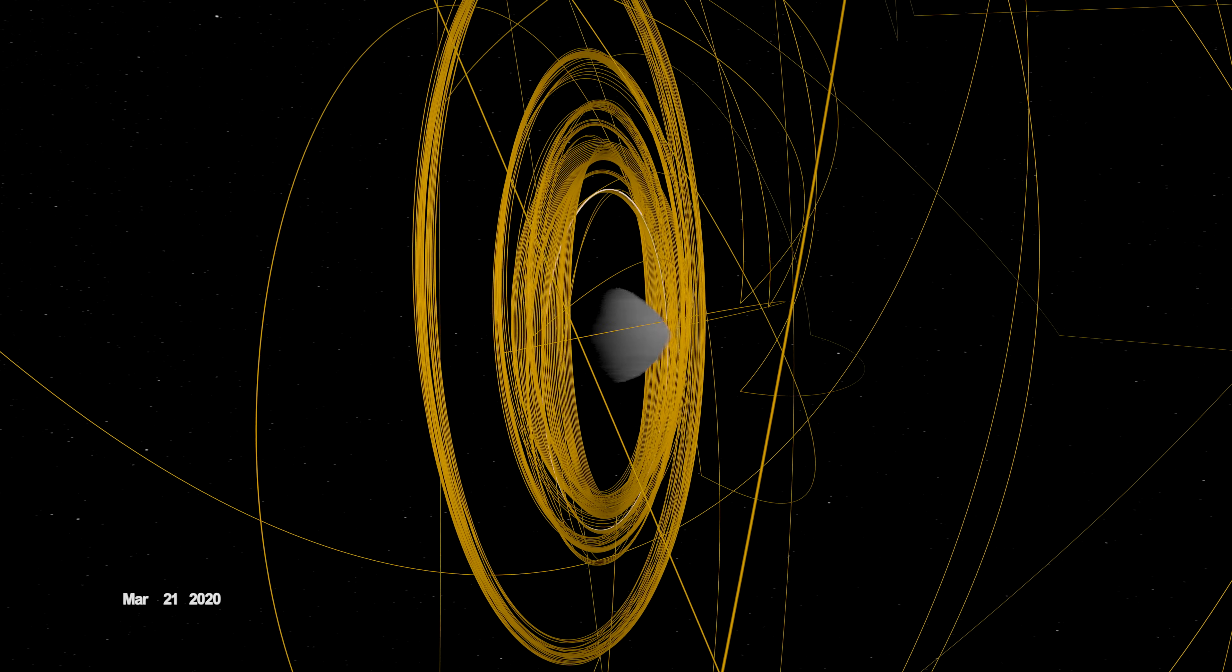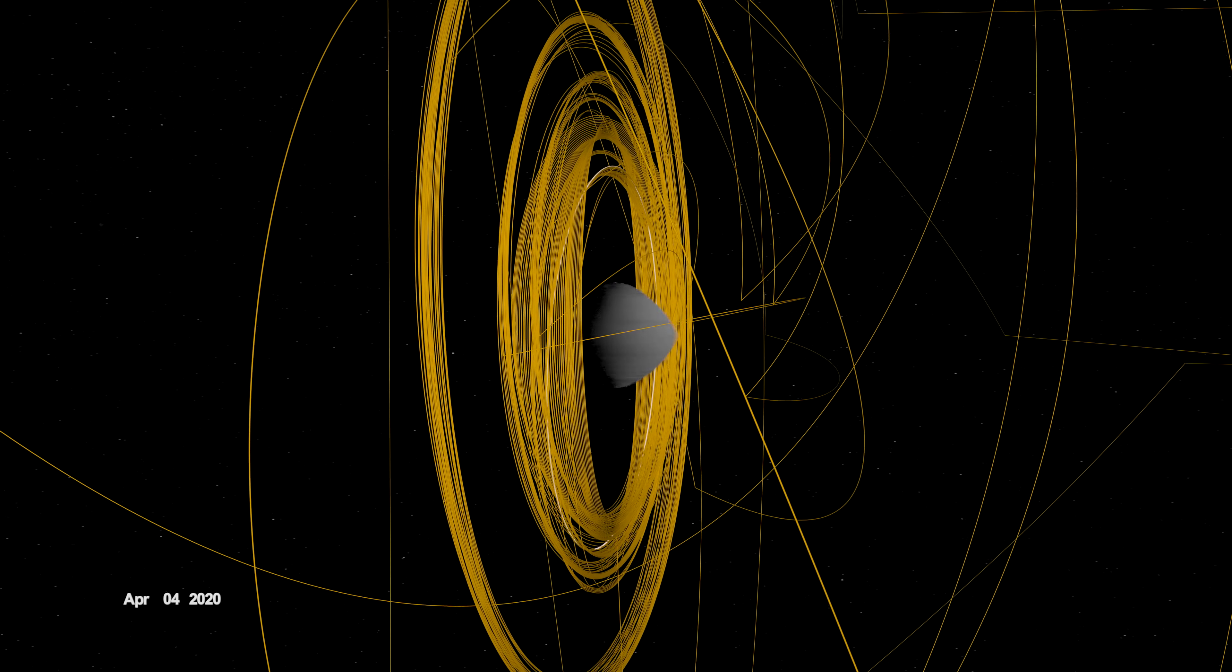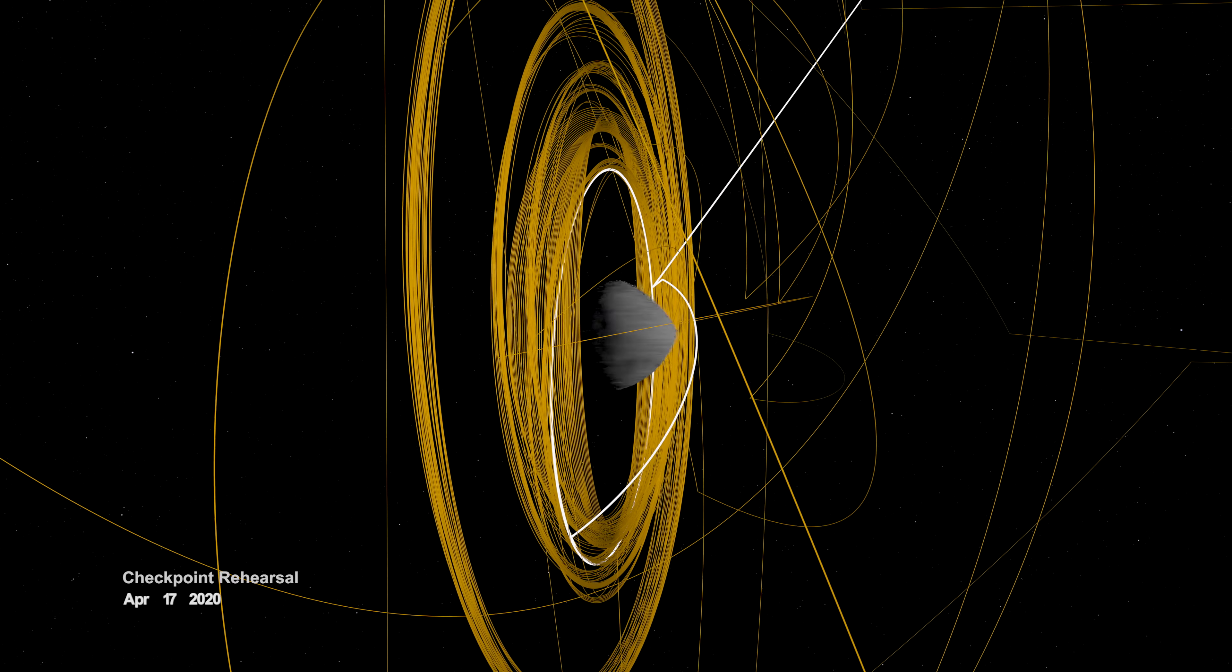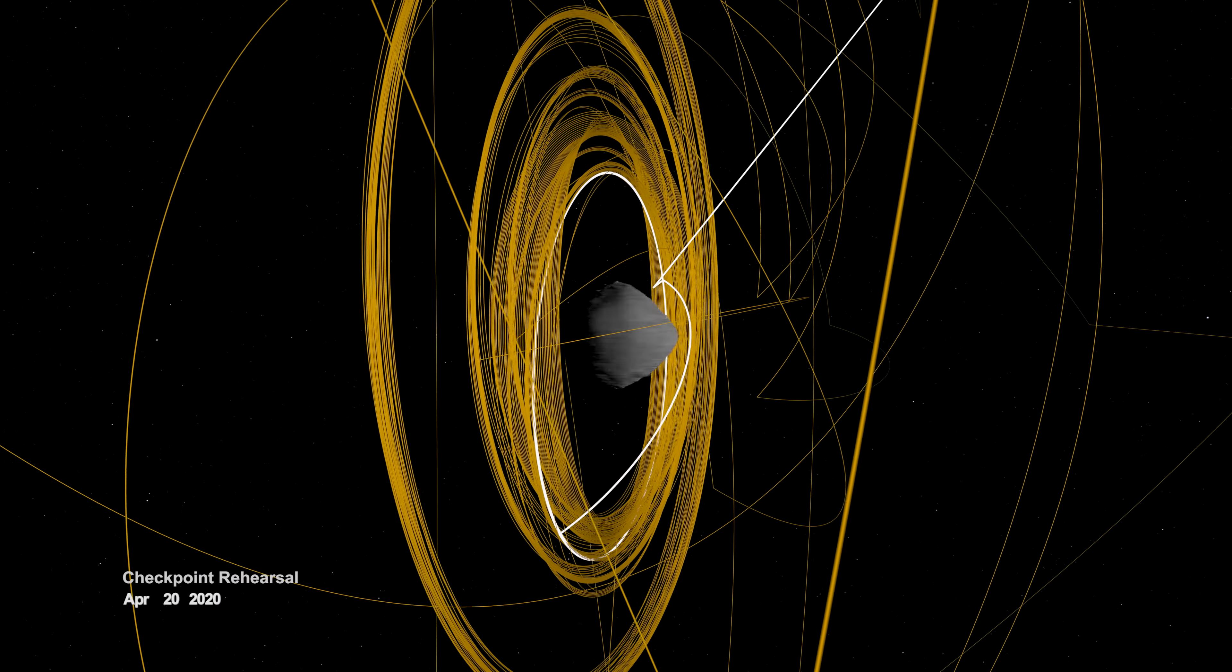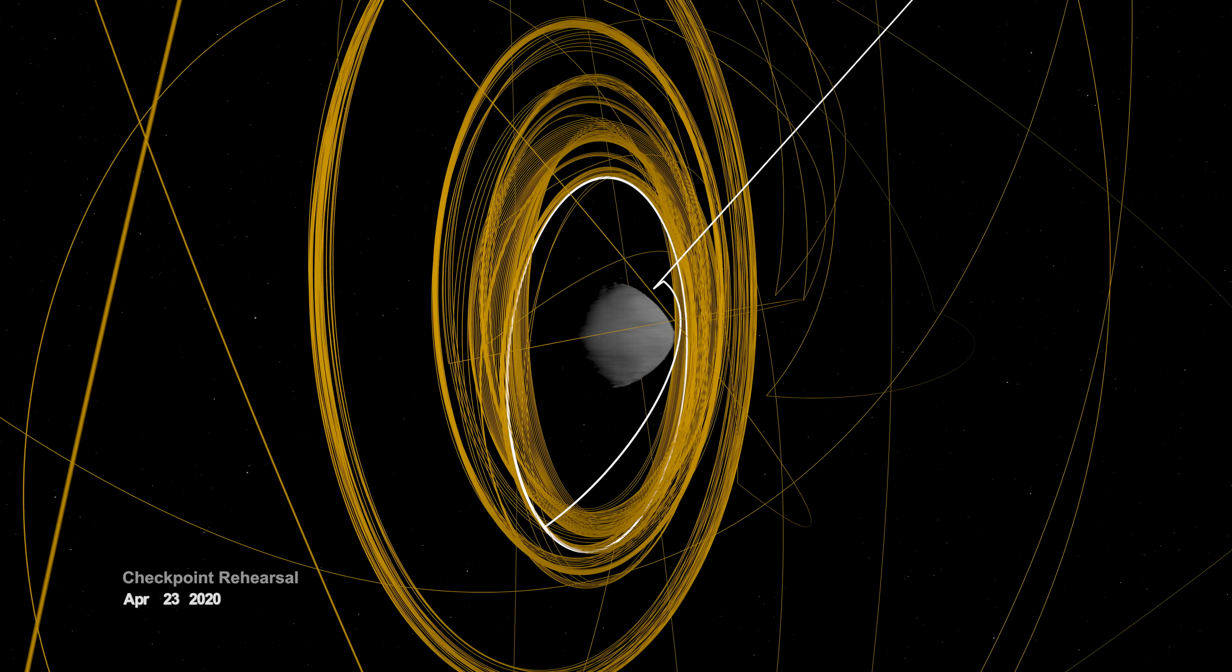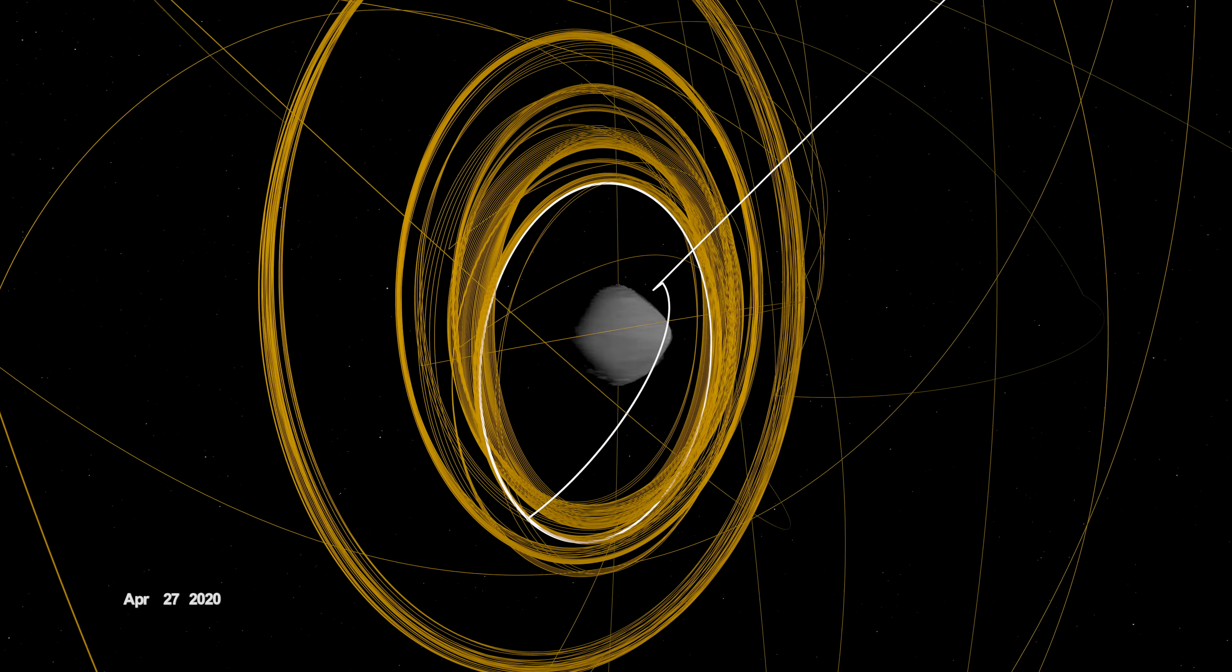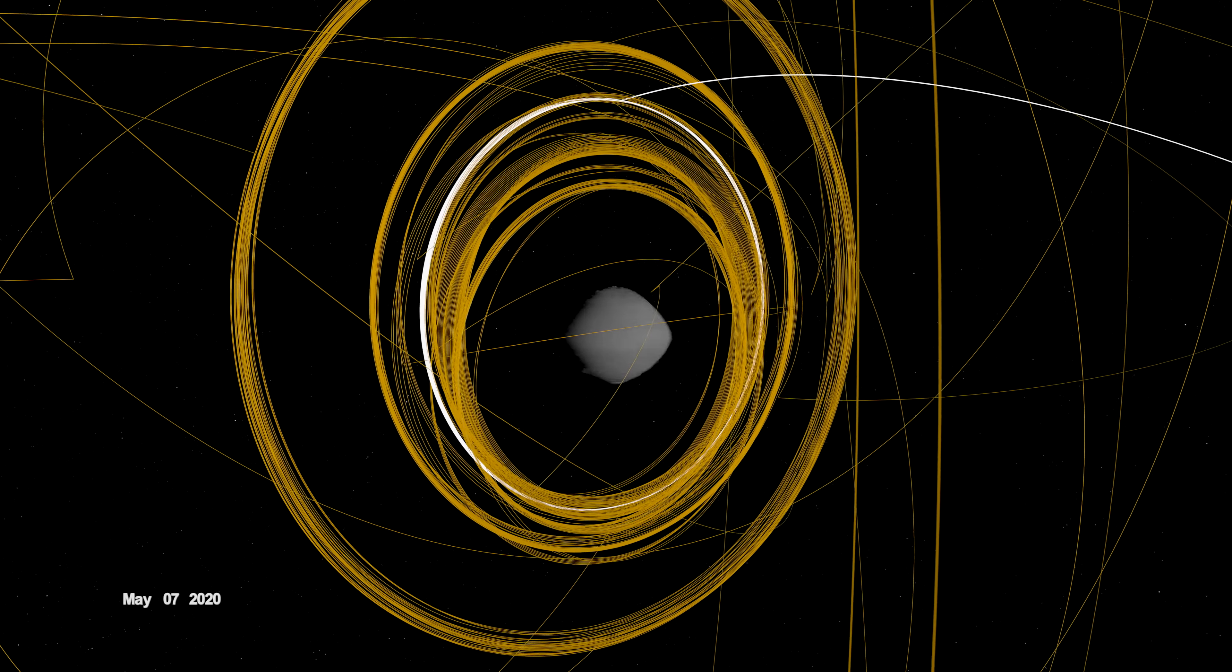In mid-April, OSIRIS-REx performed the first of two rehearsals prior to sample collection. It navigated to a predetermined checkpoint about 125 meters above Bennu, then descended to within 65 meters before backing away.